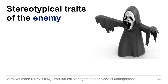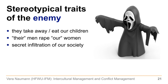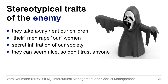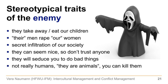Let's look at enemies. There are stereotypical traits of enemies found all over the world and in many cultures. For instance: they take away or eat our children; their men rape our women; there is a secret infiltration of our society — so they can seem nice, but don't trust anyone, it could be an enemy; they will seduce you to do bad things; and they're not really humans, they are animals you can just kill. These are stereotypical traits of the enemy.